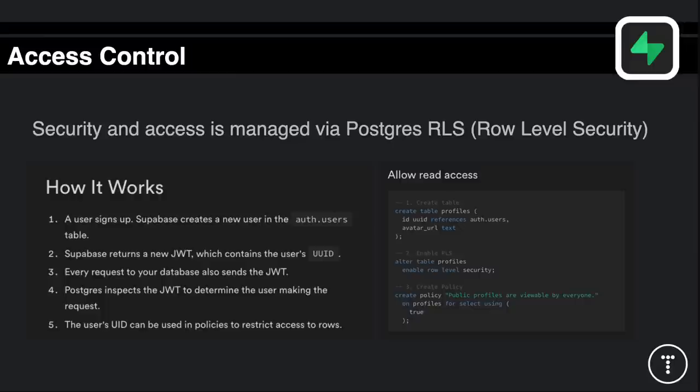As far as access control goes, Supabase uses the Postgres RLS feature - row level security. Any policies you create are written directly in SQL. With Firebase, permissions use the common expression language, which makes it difficult to move platforms. With Supabase, all your security and policies are just done in Postgres SQL. The authentication flow: a user signs up through your application, creates a new user in the auth.users table, Supabase returns a new JSON web token with the user's ID, and every request to the database also sends that JWT.